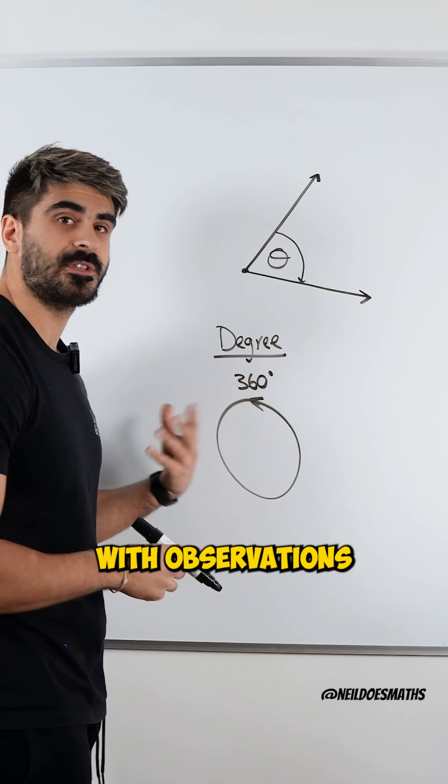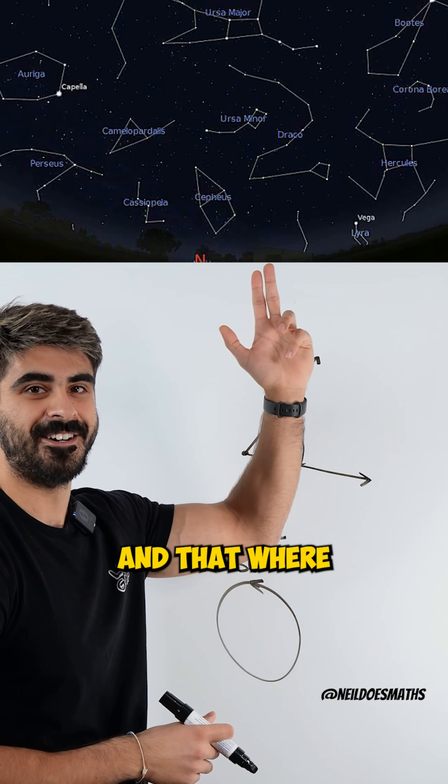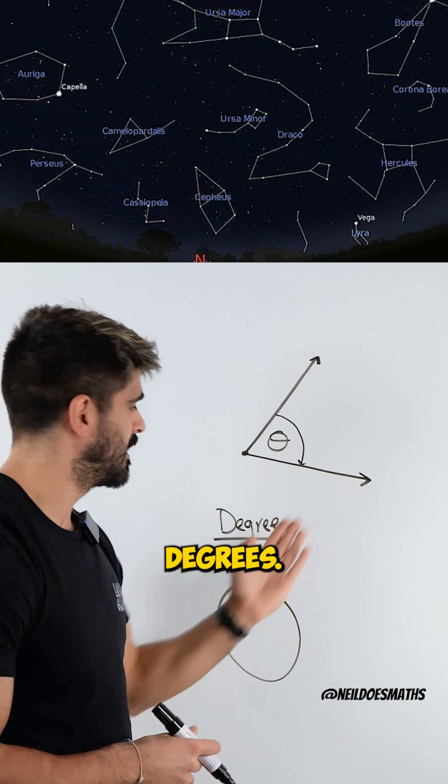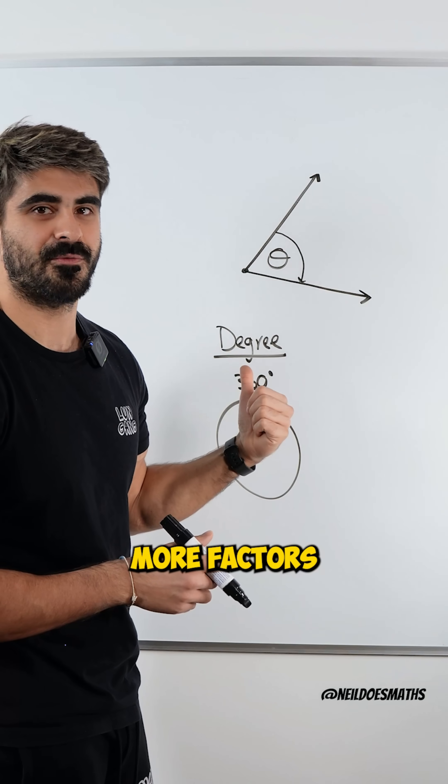Most likely to do with observations of the constellations or the astronomy, and that where a full rotation around the sun is 365 degrees. This does the job just better because there's more factors.